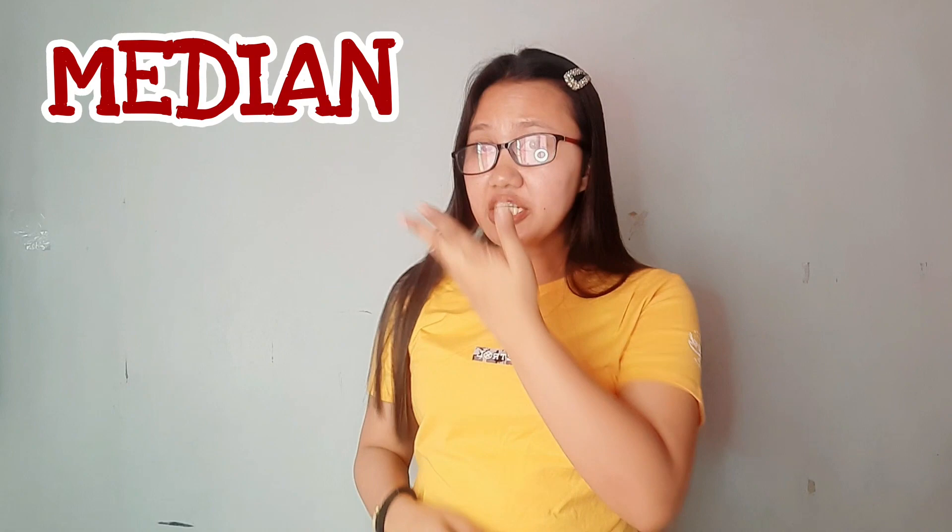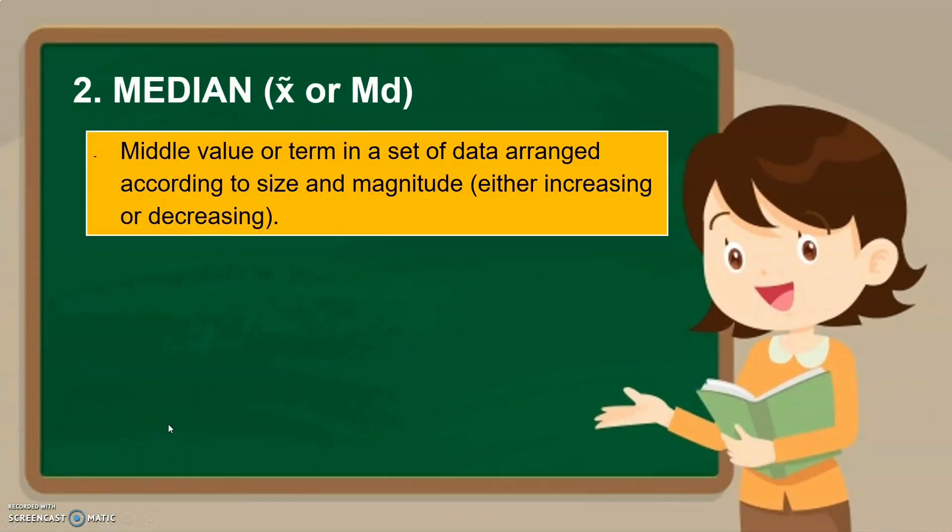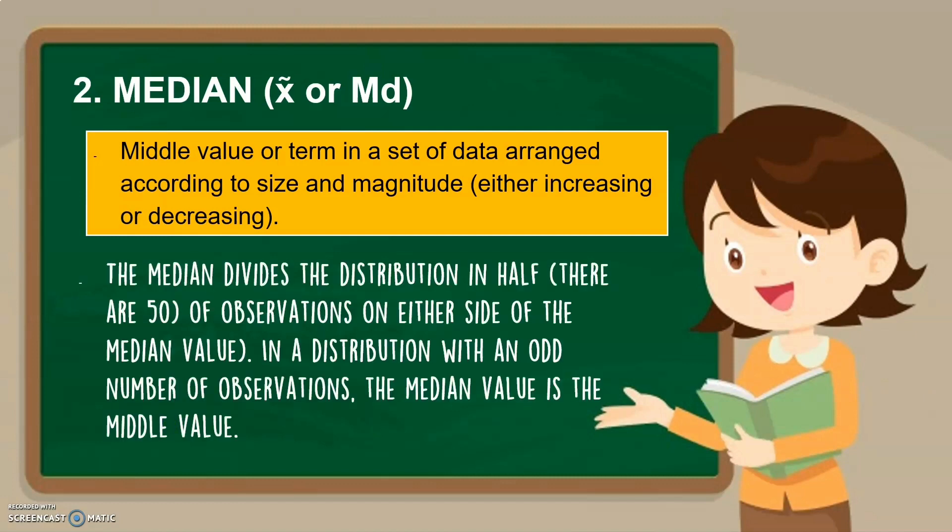Next, let us proceed with the second measure of central tendency, the median. The median refers to the middle point of the scores. Ibig sabihin, kung binigyan ka ng scores, kailangan mo muna siyang i-arrange from highest to lowest, or lowest to highest, and then kung ano yung nasa gitna, yun ang middle point. Median, this is the middle value or term in a set of data arranged according to size and magnitude, either increasing or decreasing. The median divides the distribution in half. In a distribution with an odd number of observations, the median value is the middle value.